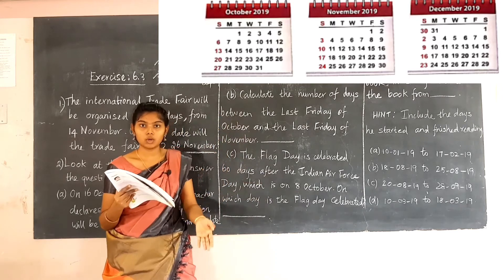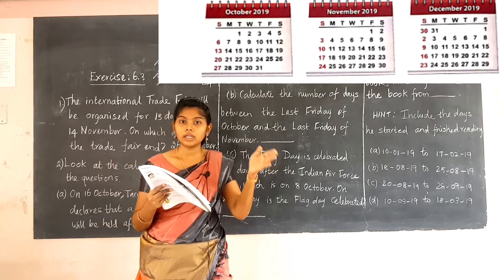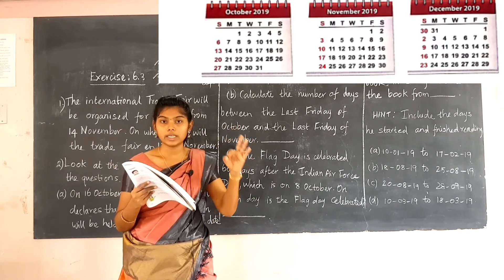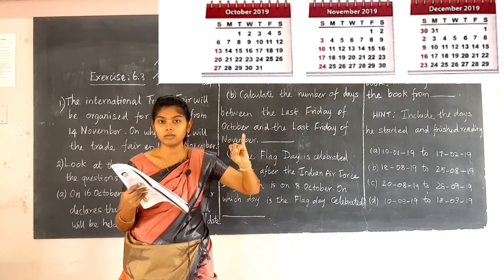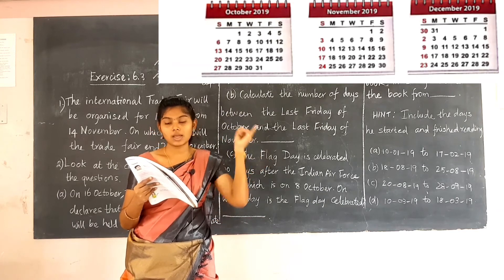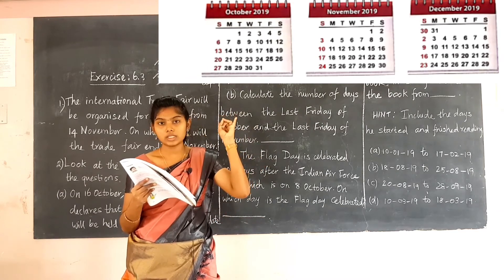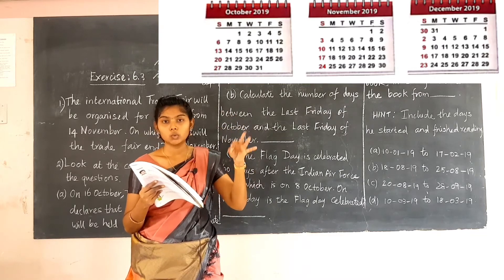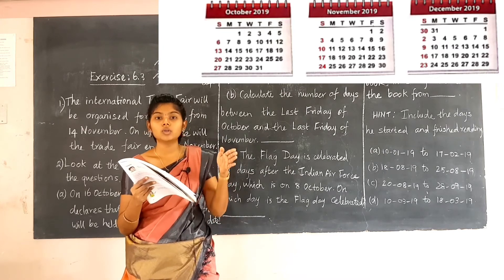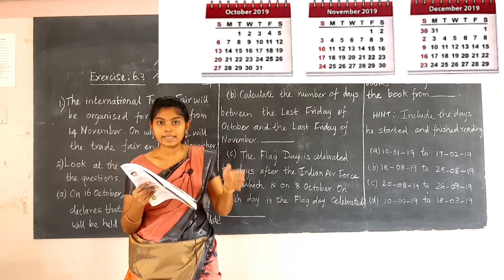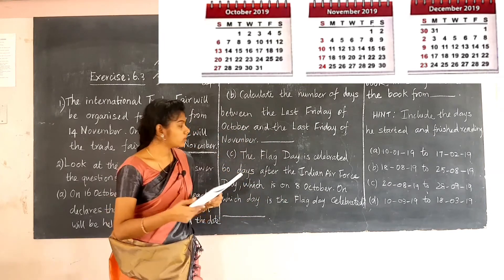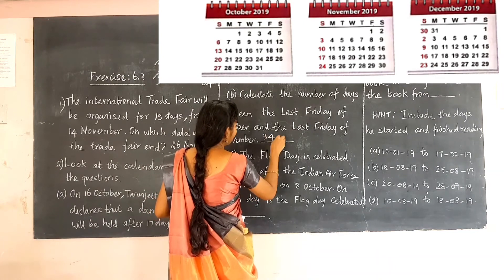Start counting from 26 October: 26, 27, 28, 29, 30, 31 — that is 6 days in October. Then continue from 1 November: 1, 2, 3, up to 28 November. Totally, there are 34 days between October 25 and November 29.